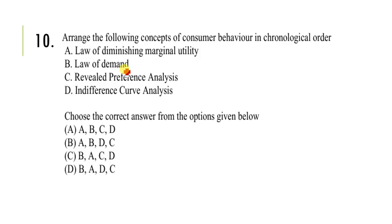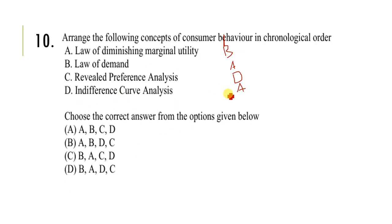Next question: arrange the following concepts of consumer behavior in chronological order. The correct order is: first the law of demand, then the law of marginal utility, then indifference curve analysis, then revealed preference theory. So the correct option sequence is B, A, D, C — with revealed preference theory as the last concept.